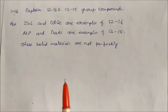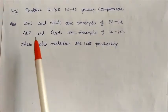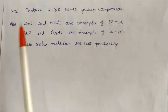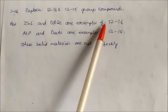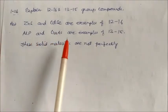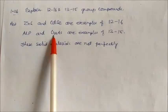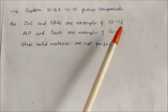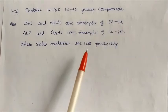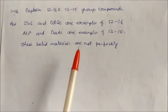Group 12-16 compounds include zinc sulfide (ZnS) and cadmium selenide (CdSe), where zinc and cadmium are group 12 and sulfur and selenium are group 16. Group 13-15 compounds include aluminium phosphide (AlP) and gallium arsenide (GaAs), where aluminium and gallium are group 13 and phosphorus and arsenic are group 15. These solid materials are not perfect and show certain electronic effects.